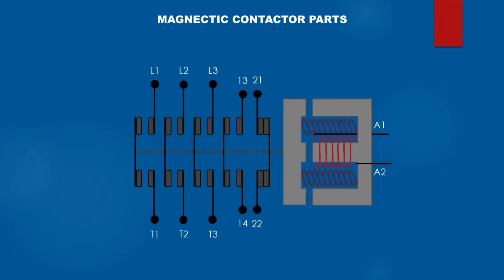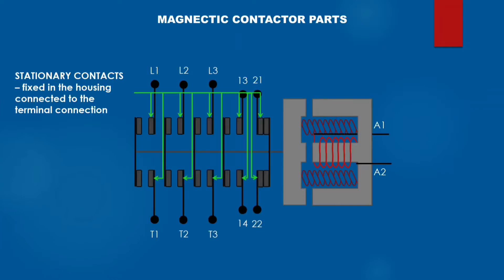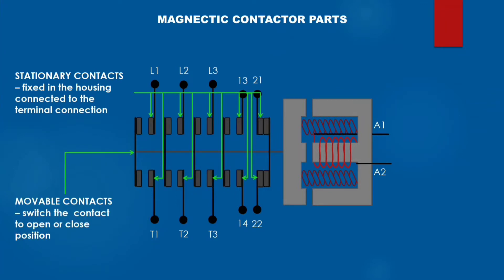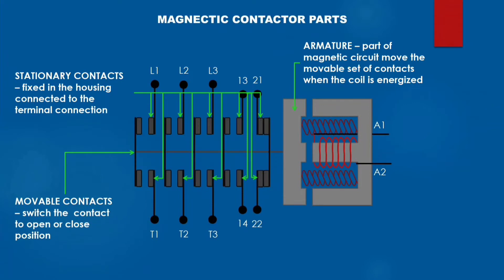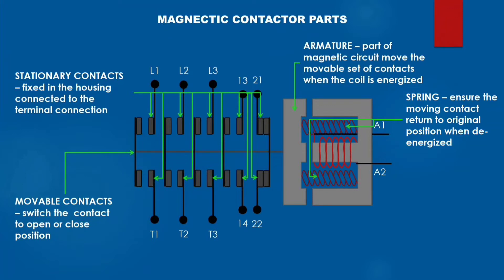Magnetic contactor parts: stationary contacts are fixed in the housing and connected to the terminal connection. Movable contacts switch the contact to open or closed position. The armature is part of the magnetic circuit that moves the movable set of contacts when the coil is energized. The spring ensures the moving contact returns to its original position when de-energized.